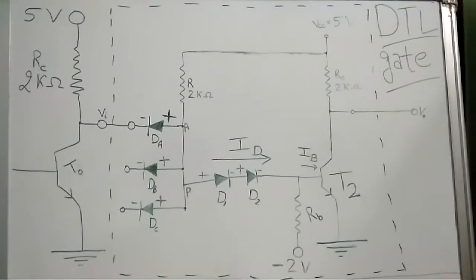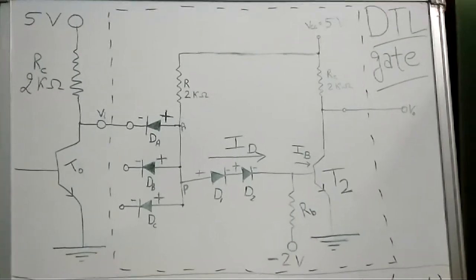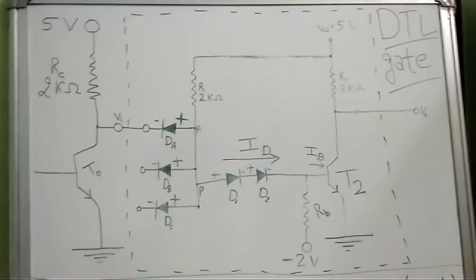This is the discrete circuit of a DTL NAND gate. To study this, we have to first consider some basic points.